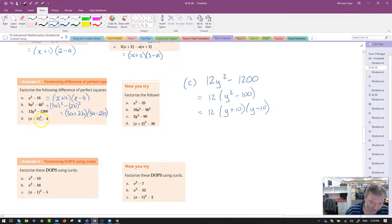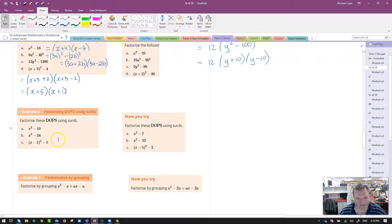Lucky last one here. X plus 3 all squared minus 4. Well, 4 is 2 squared. So this is going to be x plus 3 plus 2 times x plus 3 minus 2. I can go ahead and simplify now. That's x plus 5 times, and 3 minus 2 is 1, so x plus 5 times x plus 1. There are some there for you to try. I'll come back later.